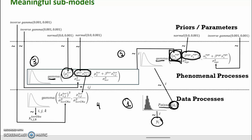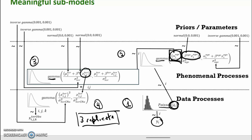A fourth submodel says that the territory size of any individual bird cannot be known exactly. We have three replicate observations, and these three replicate observations are deemed to arise from a gamma distribution which has as its mean the true territory size of that bird. So a complicated system is partitioned into meaningful submodels.